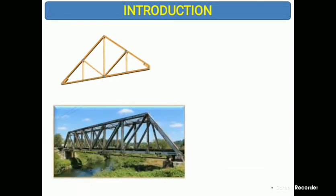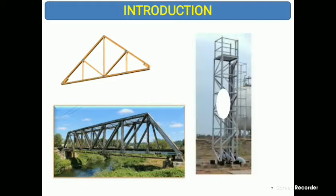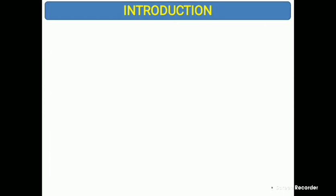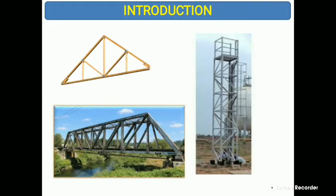Here is a simple example — this is a bridge made up of trusses, and this is a tower also made up of trusses. These are called coplanar trusses, where all truss elements lie in a single plane. When elements lie in different planes, those are called space trusses — they are three-dimensional.